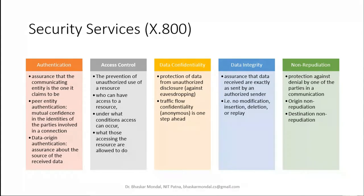Security services are given by X.800. The first service mentioned is authentication. Authentication provides assurance that the communication entity is the one it claimed to be. For example, somebody is logging into the system claiming to be the manager, so the mechanism should be able to authenticate that person — confirming he is the real manager and not someone pretending.